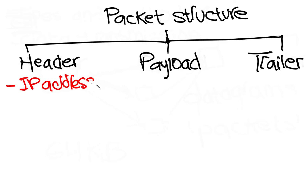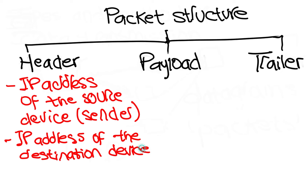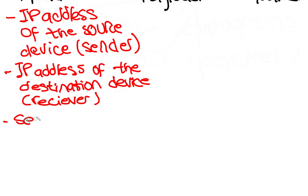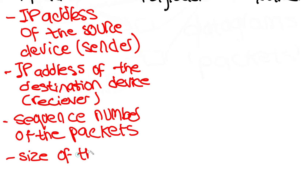For each packet, the packet header consists of the IP address of the sending device, the IP address of the receiving device, the sequence number of the packet — this is to ensure that all the packets can be reassembled into the correct order once they reach the destination — and the packet size, which ensures that the receiving station can check if all the packets have arrived intact.